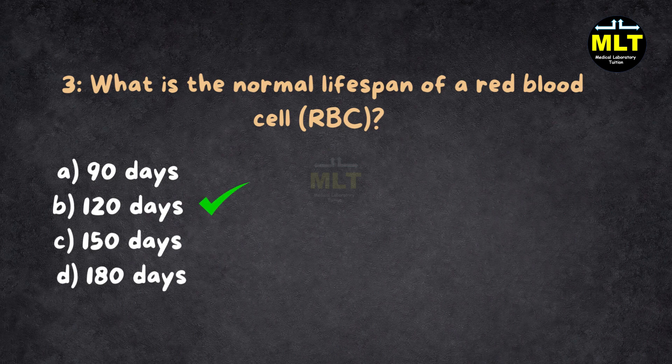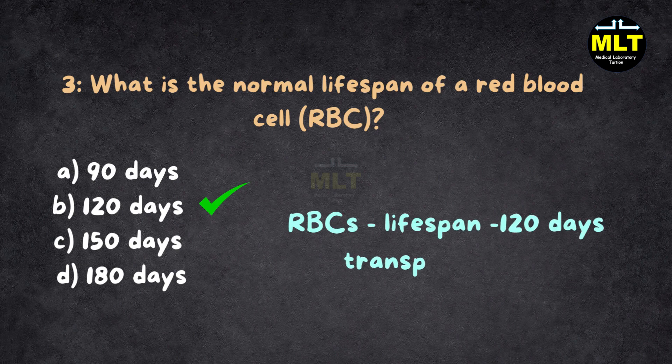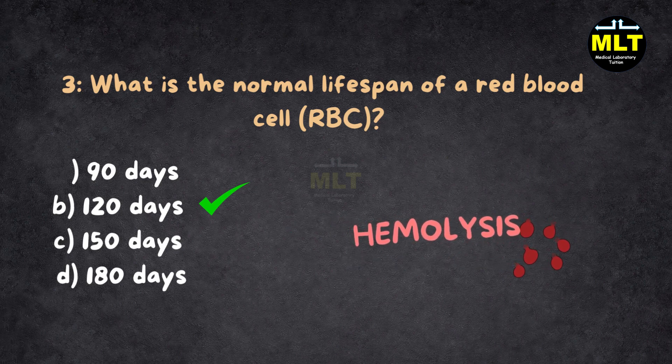Correct answer: B. 120 days. Explanation: RBCs have a lifespan of about 120 days, during which they transport oxygen throughout the body. They are then destroyed in the spleen through a process called hemolysis.